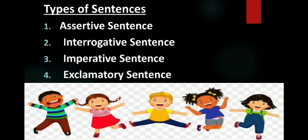Now I am going to tell you about different types of sentences. First one is assertive sentence. Second, interrogative sentence. Third, imperative sentence. Fourth one is exclamatory sentence. We are going to discuss each kind of sentence one by one in detail.